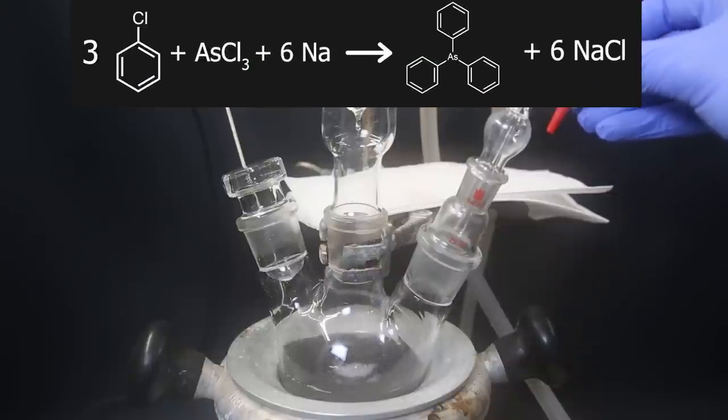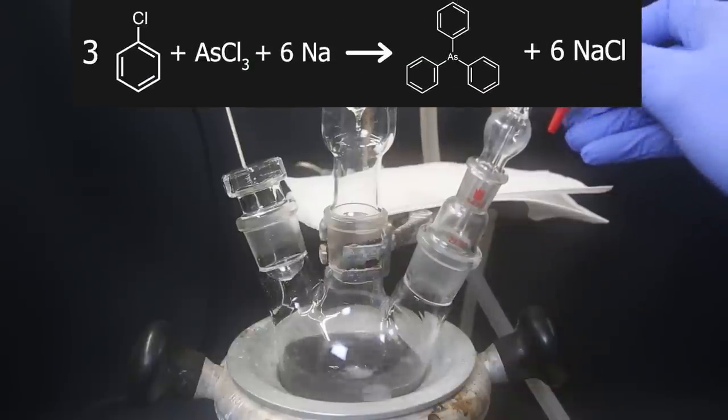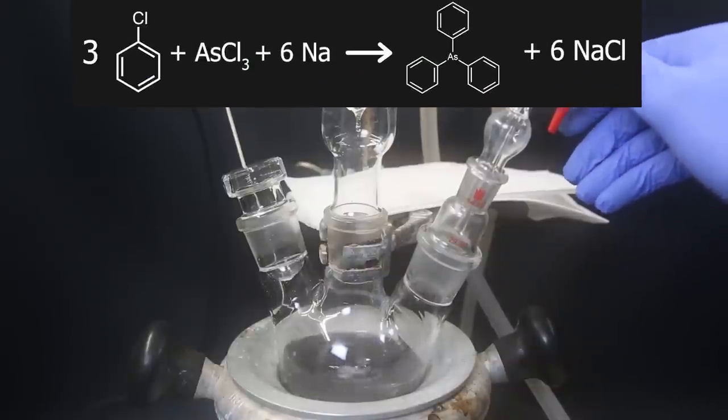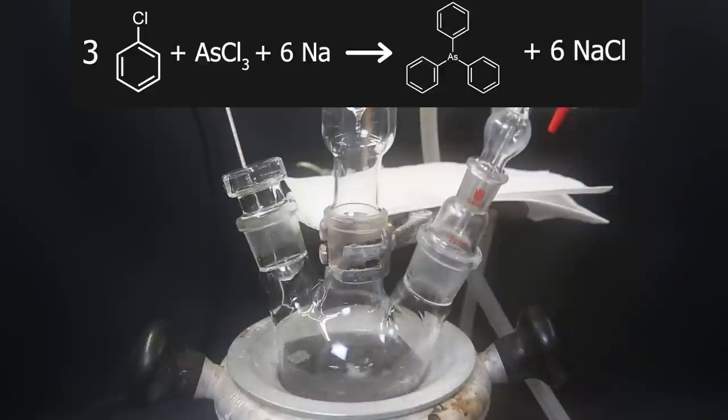In this reaction, the sodium works as a reducing agent, and facilitates the reaction by picking up chlorine atoms. One by one, the phenyl groups can attach themselves to the arsenic, and finally form triphenyl arsine, with sodium chloride as a byproduct.